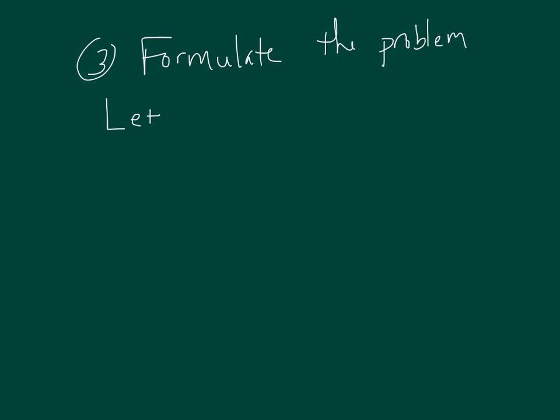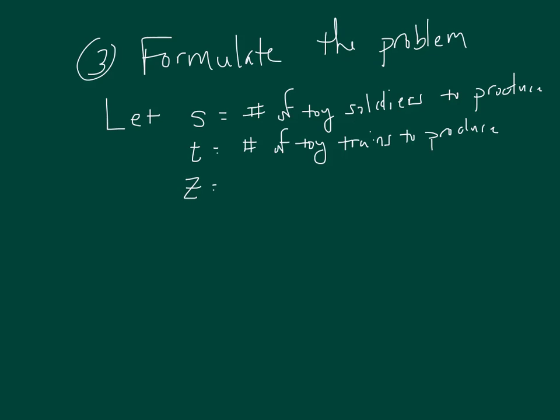Take this approach: we're going to first say 'let' and define the decision variables. Let's say we're a toy company making toy soldiers and toy trains. Let S equal the number of toy soldiers to produce. Let T equal the number of toy trains to produce. A lot of times I'll go ahead and define a variable called Z, which is my objective function. Here, let's say we're going to maximize profit, so Z will be total profit.